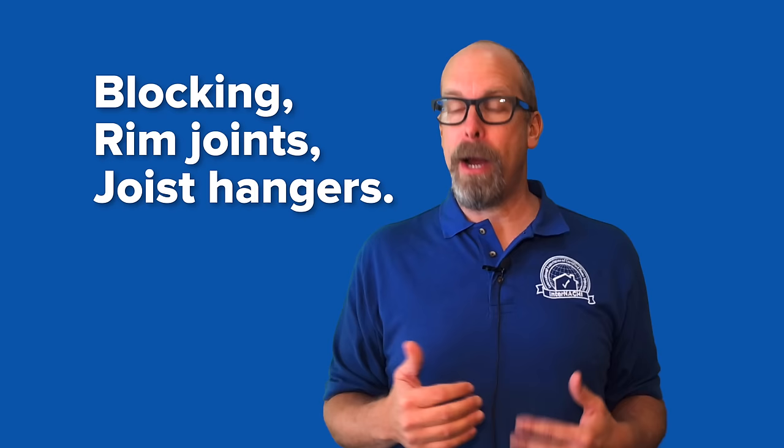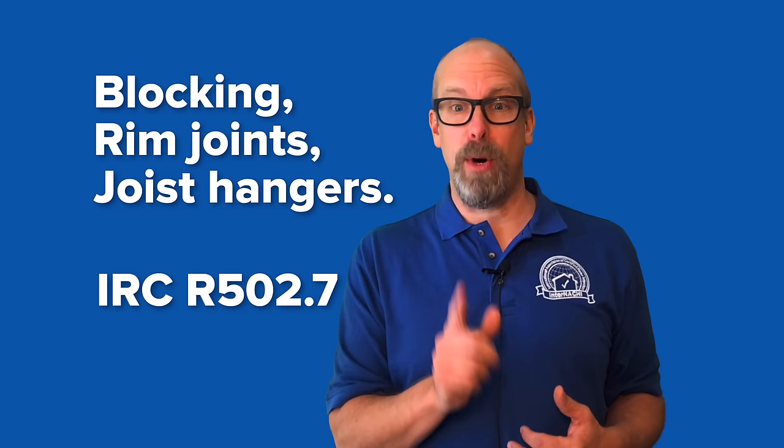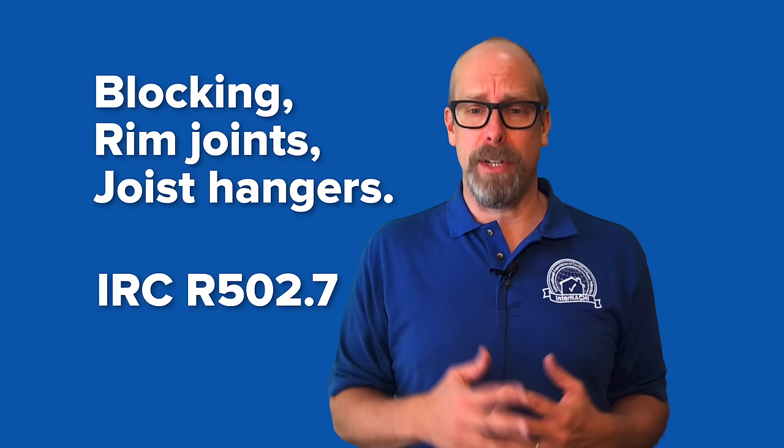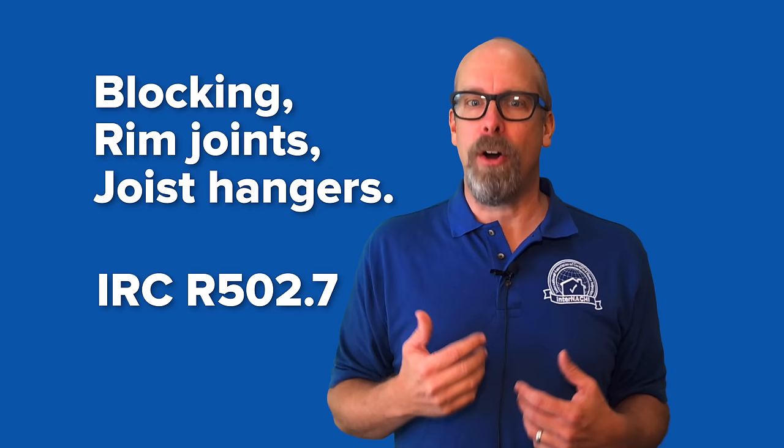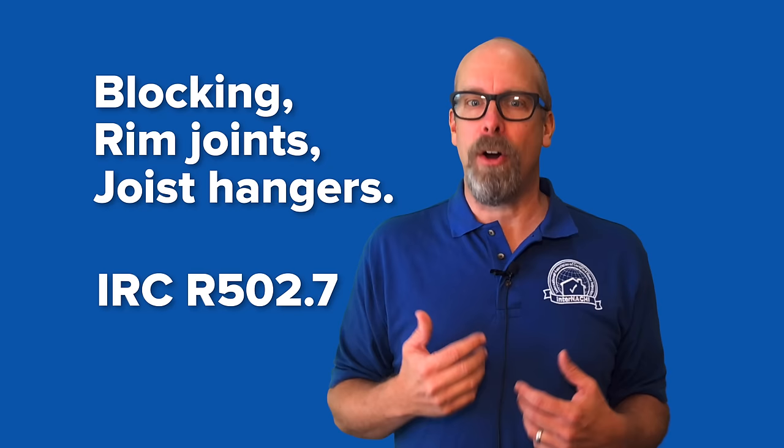Blocking, rim joists, or joist hangers at the ends and bearing locations are what ultimately keep the joist upright and stressed. IRC 502.7 in the code will help. Other than hangers, which also support the vertical load, these other features do almost exclusively that. Blocking and rim joists resist rotation. When the height of the joist compared to its width is greater than 2 to 1, the width can't hold the joist upright along their length, and bridge blocking is required within the span to prevent the joist from rolling over.